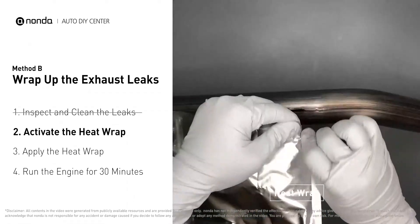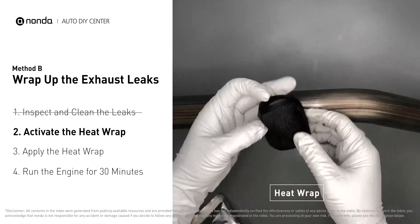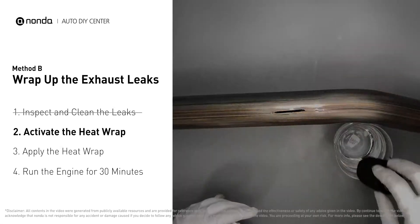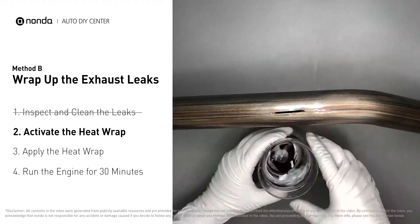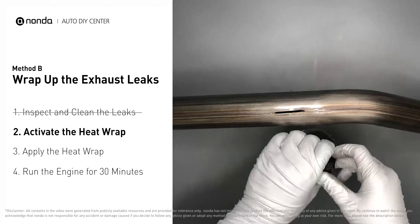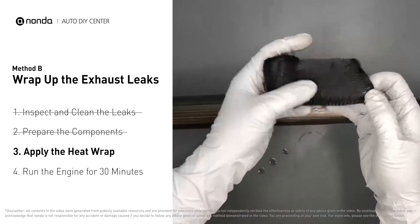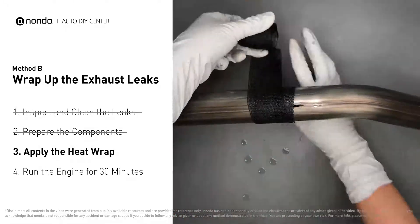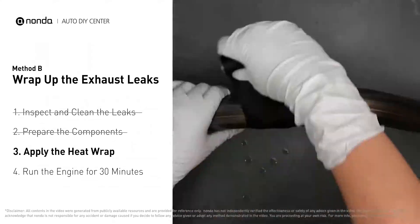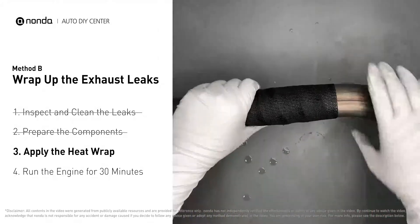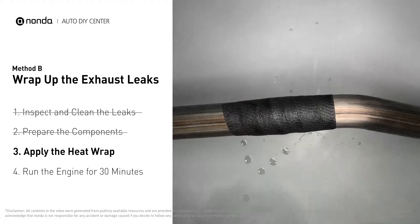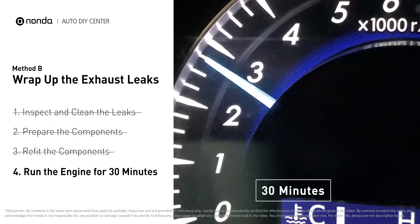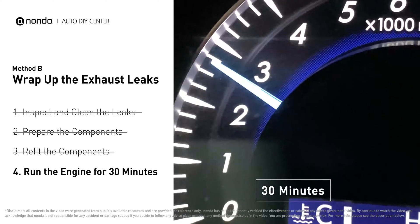Get the heat wrap out and put it in water for about 30 to 40 seconds to start the activation process. Then remove it and squeeze out any excess water. Wrap it around the area and overlap it a couple of inches on each side, repeating the process three or four times, then squeeze it to make the resin go all the way through. Start the car and let it run for 30 minutes so the heat cures it and makes a permanent fix.